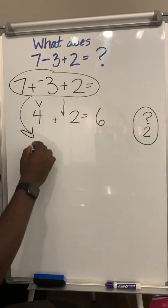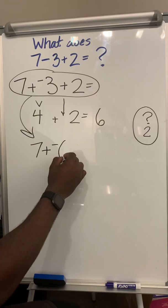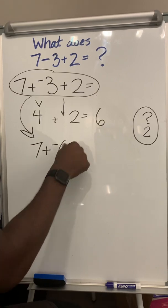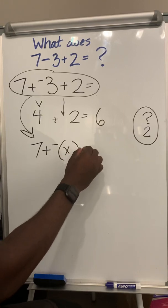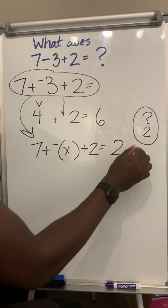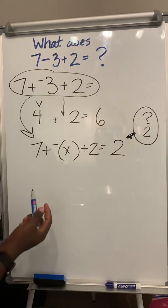Let's take this equation and take it down here. Seven plus negative, and let's put this as X right here. We're gonna make this X plus two equals two, because people are coming up with this notion that this is two.